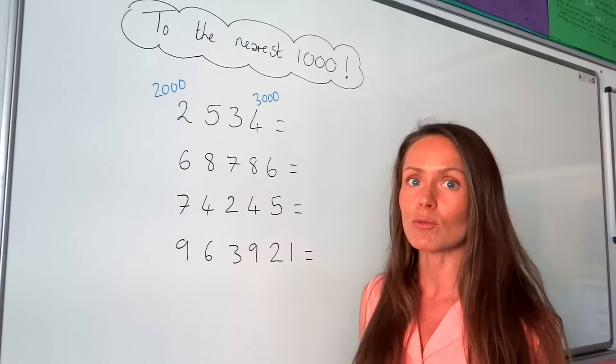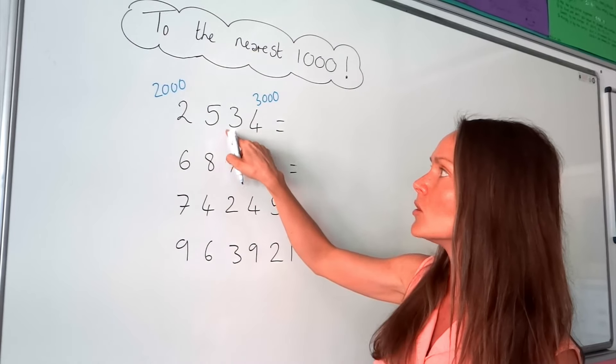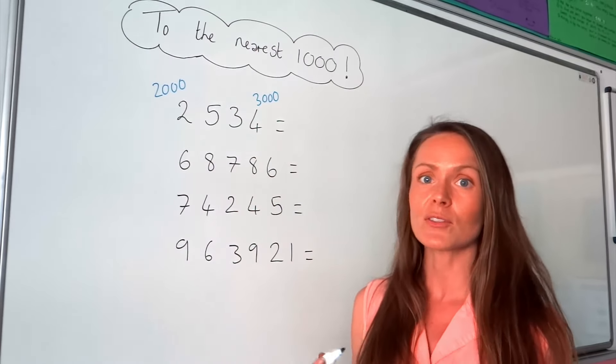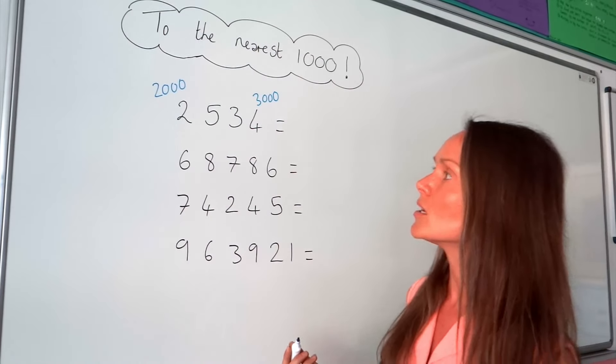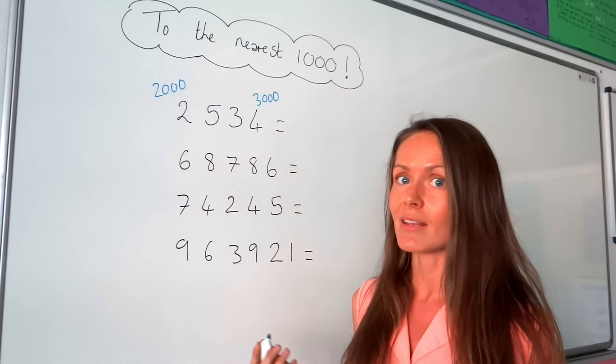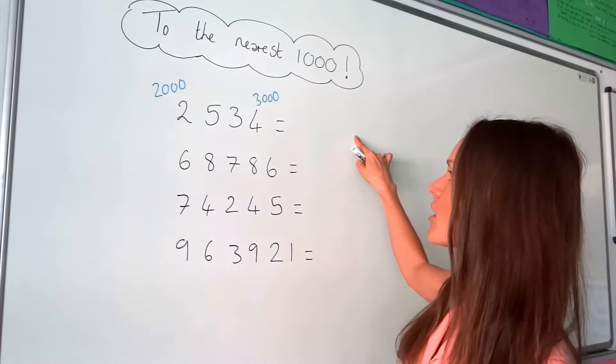So our job is to round this number up or down to one of these, and we have to round it to the one that it's closest to. So you might already be able to see which one it's closest to, which in that case is great, and you can just write down the answer.